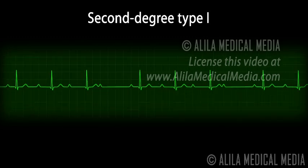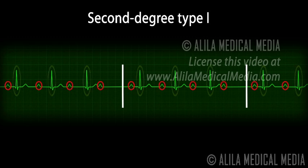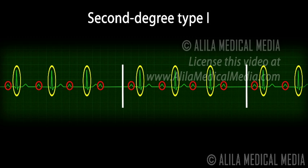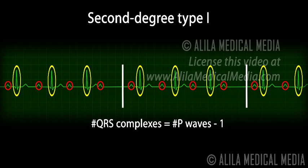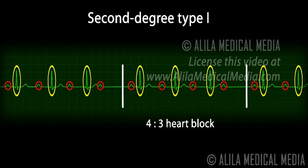This is known as a blocked P wave or dropped QRS complex. The cycle then restarts. As this usually repeats in regular cycles, there is a fixed ratio between the number of P waves and the number of QRS complexes per cycle. The number of QRS complexes always equals the number of P waves minus one. In this example, there are four P waves for every three QRS complexes — this is a four to three heart block.